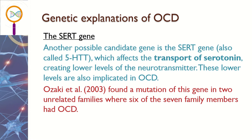Secondly, there is the CERT gene, otherwise known as 5-HTT, which is also linked with depression. It's the gene that produces or helps transport serotonin. It's found that people with OCD, similar to those with depression, have lower levels of serotonin in their brain. There's evidence to suggest that this gene is present in several family members, all of whom are showing OCD, supporting this genetic explanation.